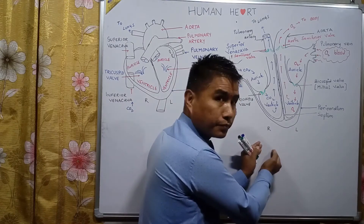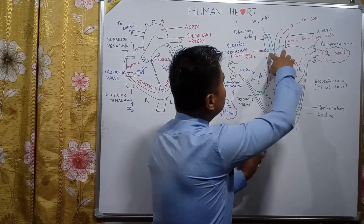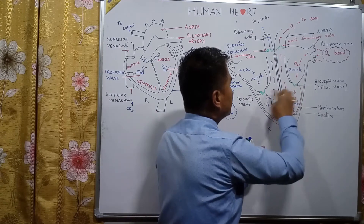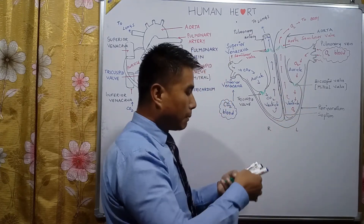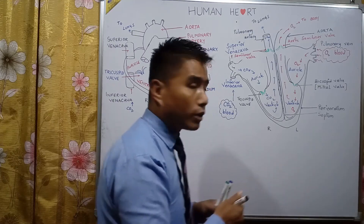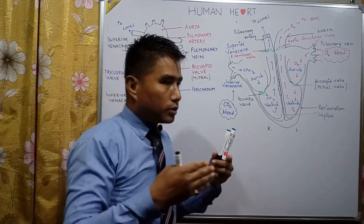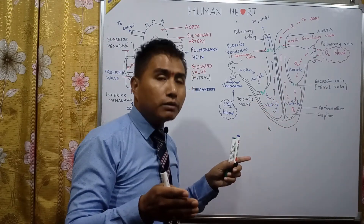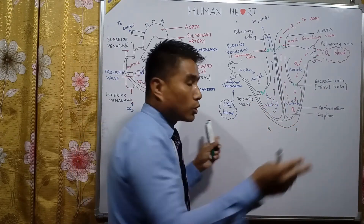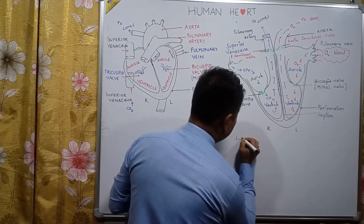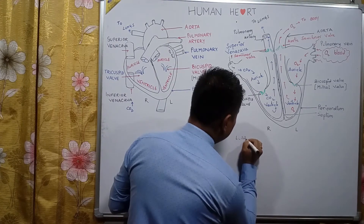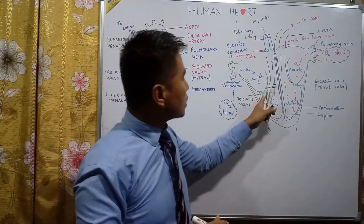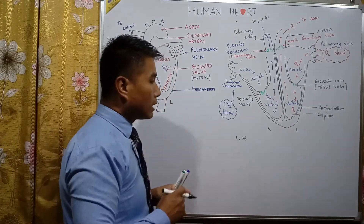When the ventricle contracts, the tricuspid and bicuspid valves close. At that time a sound is produced which is known as 'lub'. Lub is the sound produced by the closing of the tricuspid and bicuspid valves.